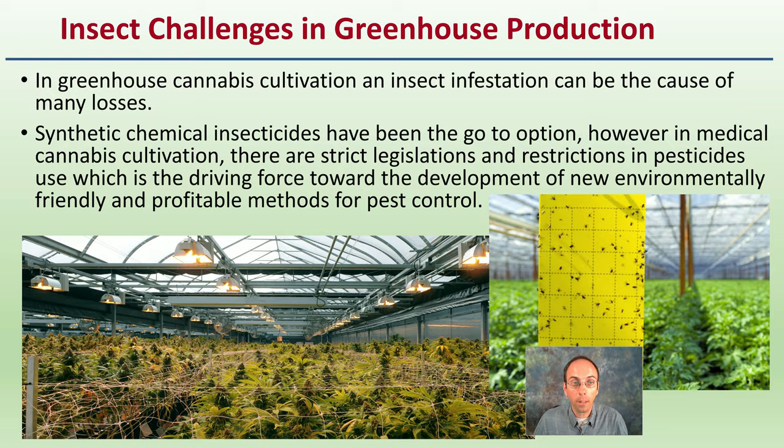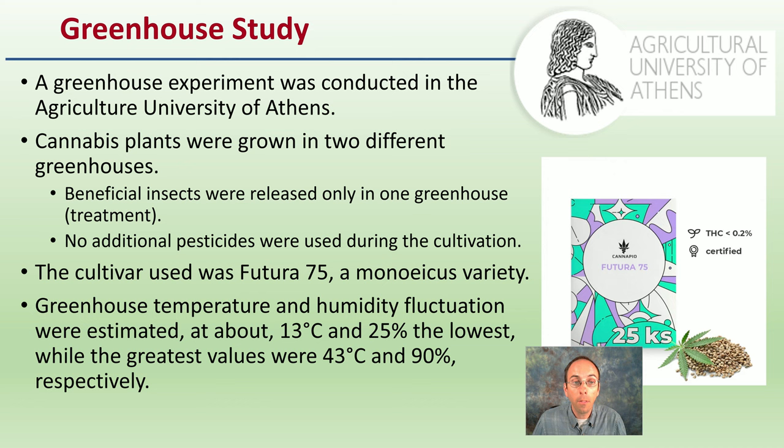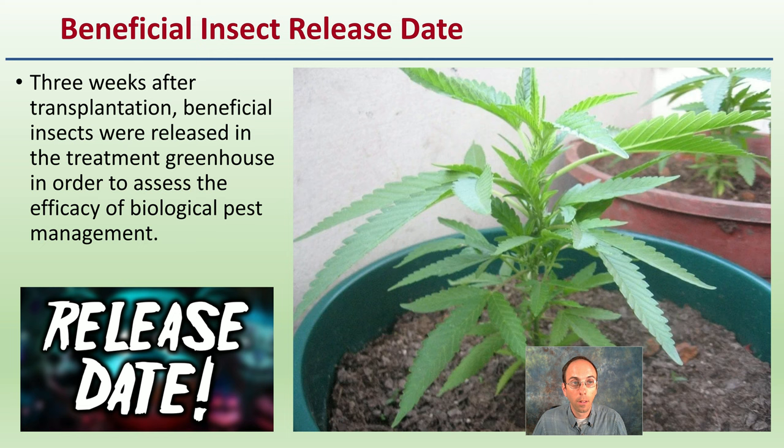This was a greenhouse study conducted at the Agriculture University of Athens. They had plants grown in two different greenhouses — one with treatment, which had the beneficial insects, and one that did not. The cultivar used was a monoecious variety, and this gives you an idea of the greenhouse's environmental conditions. The release date for the beneficial insects was three weeks after transplantation, released into the treatment greenhouse to assess the efficiency of the biological pest control method.